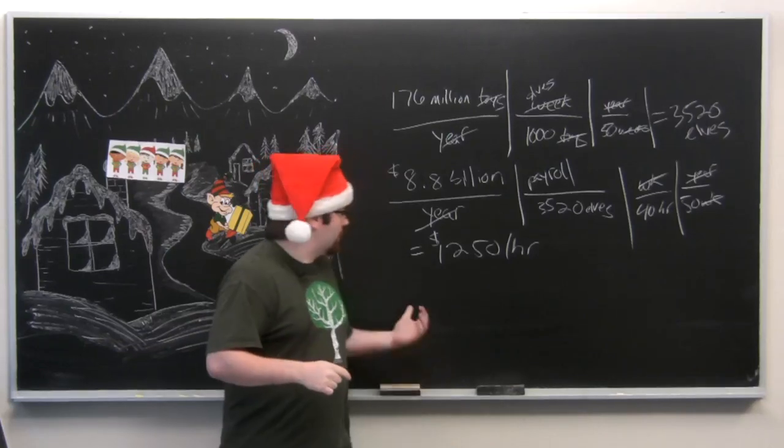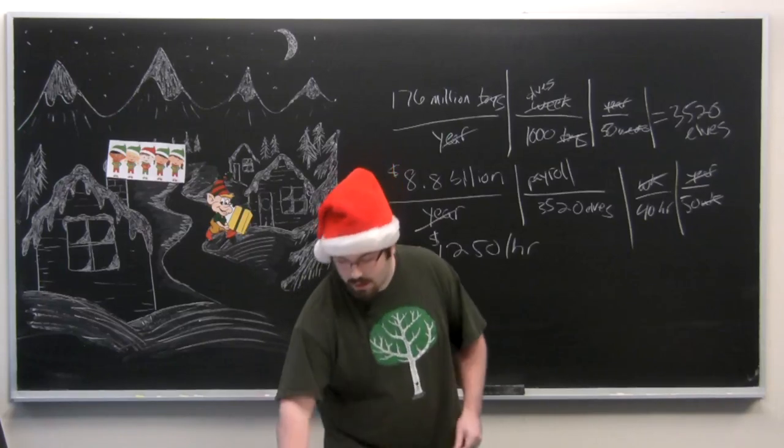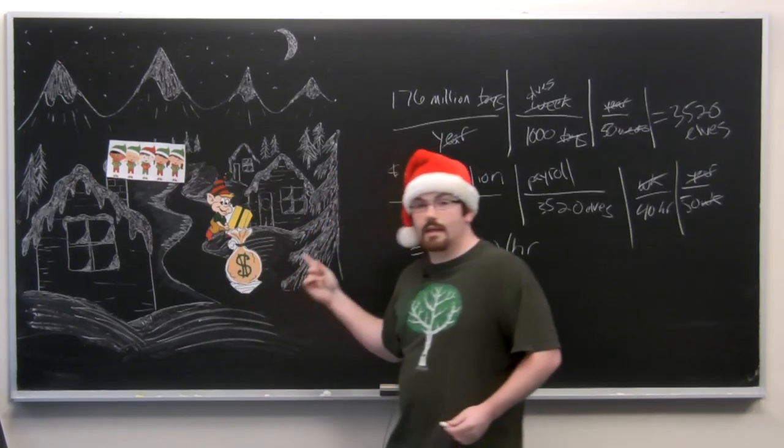So $1,250 an hour comes out to about $2.5 million a year salary. That is a lot of money.